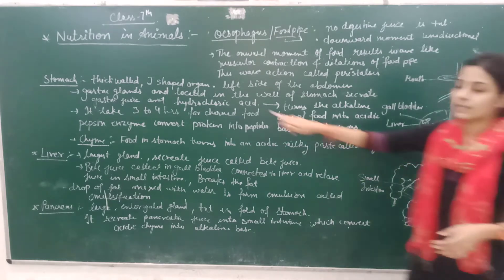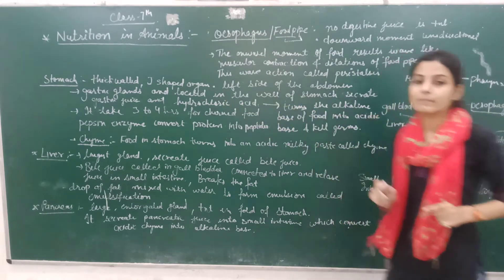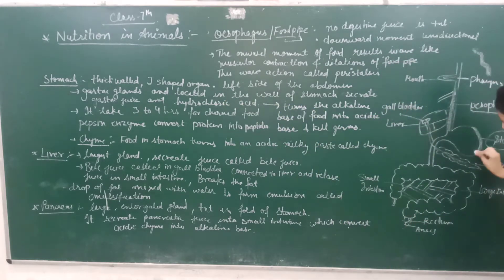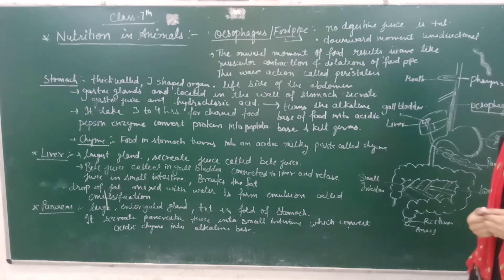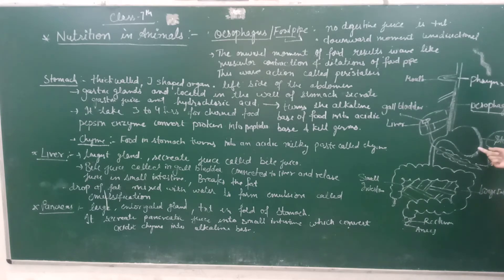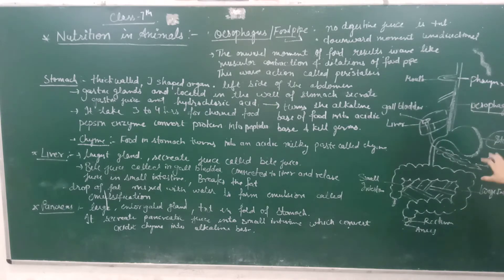The stomach is a thick J-shaped organ. It is present on the left side of our abdomen. Gastric glands are located in the stomach. Gastric juice and hydrochloric acid are secreted. The food is churned in the stomach for 3-4 hours.